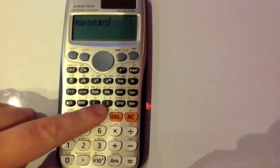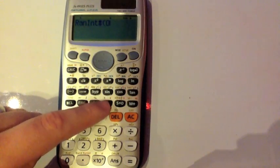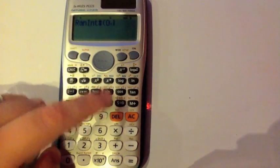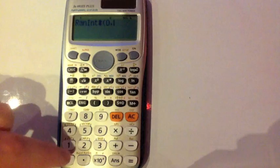And then you need a comma. Now the comma is in yellow above close brackets. So you'd press the shift button, and then close brackets, and you can see the comma's come up. And then 100.